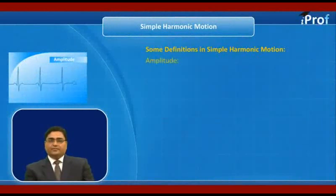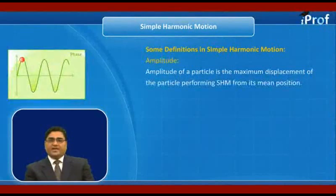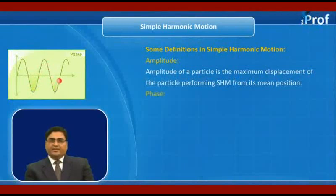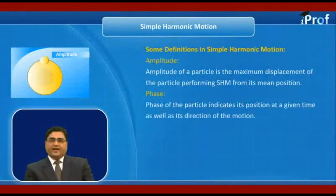What is amplitude? The amplitude of a particle is the maximum displacement of the particle performing SHM from its mean position. What is phase? The phase of a particle indicates its position at a given time as well as its direction of motion.